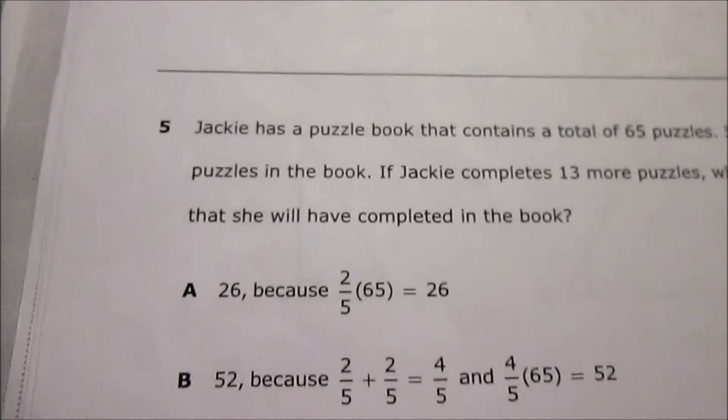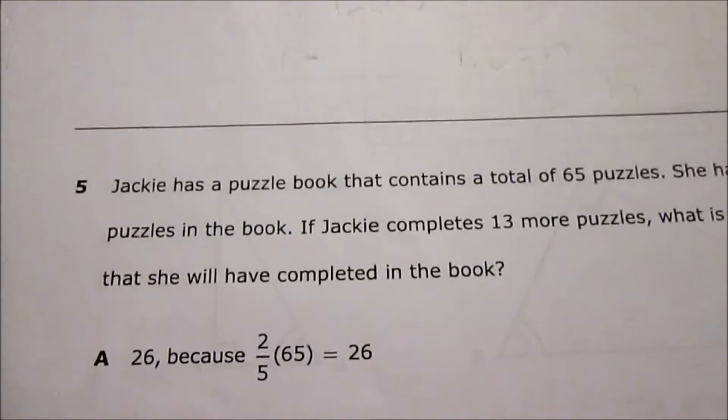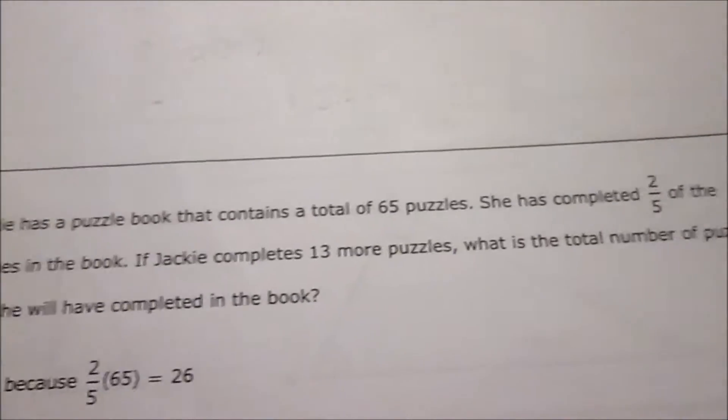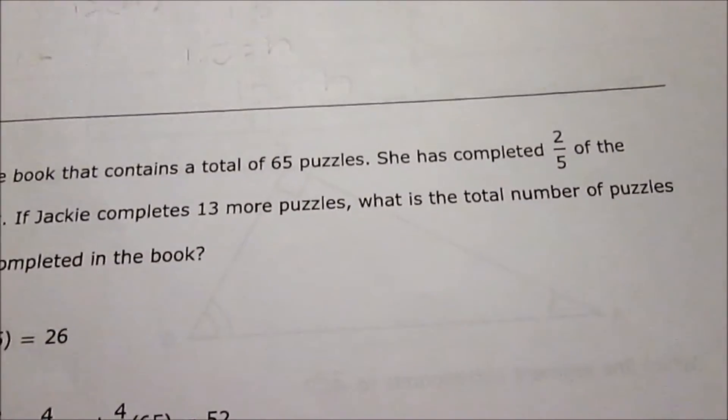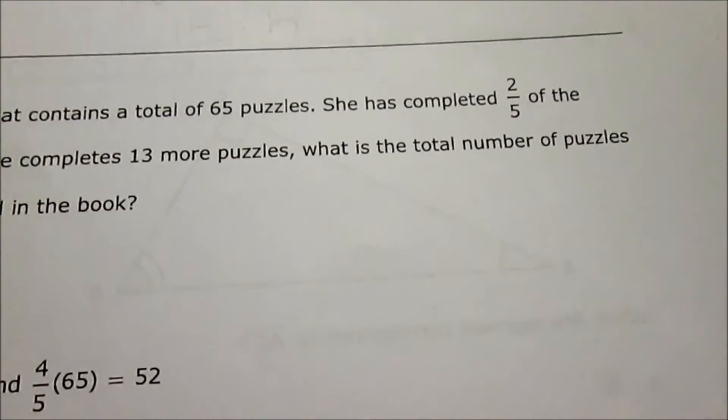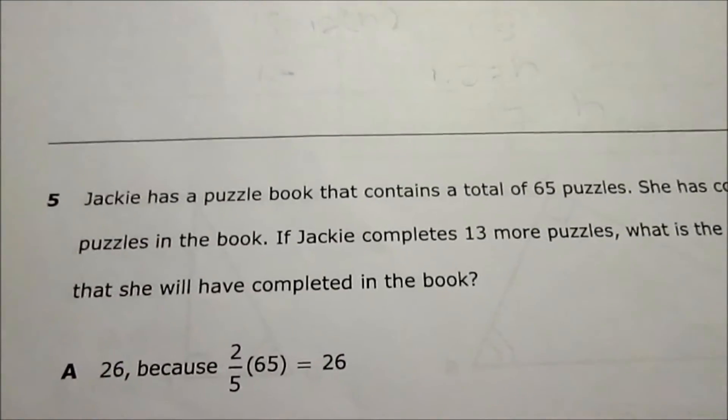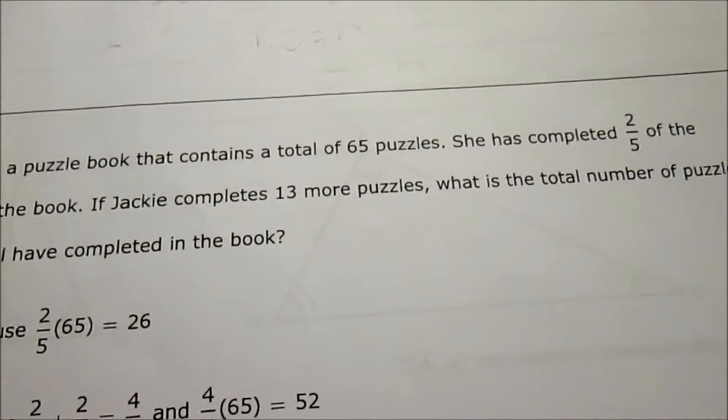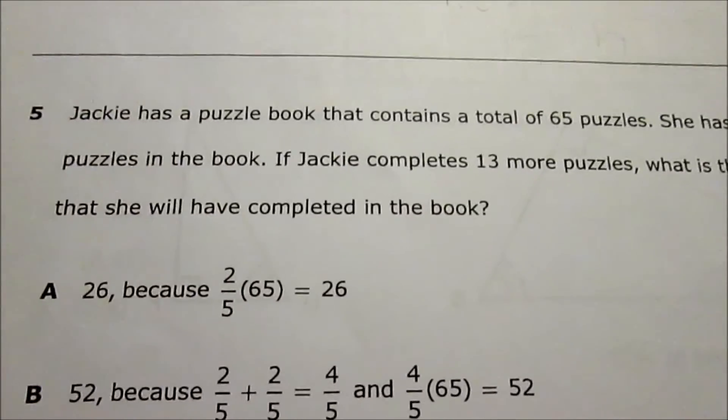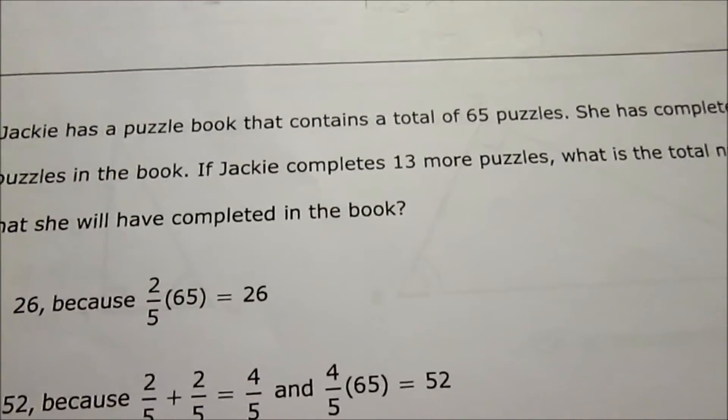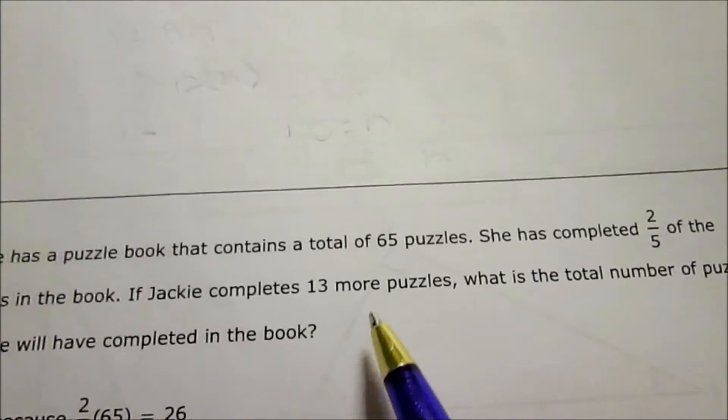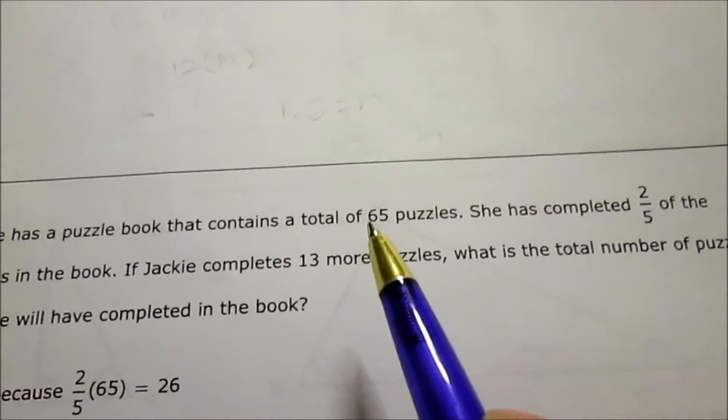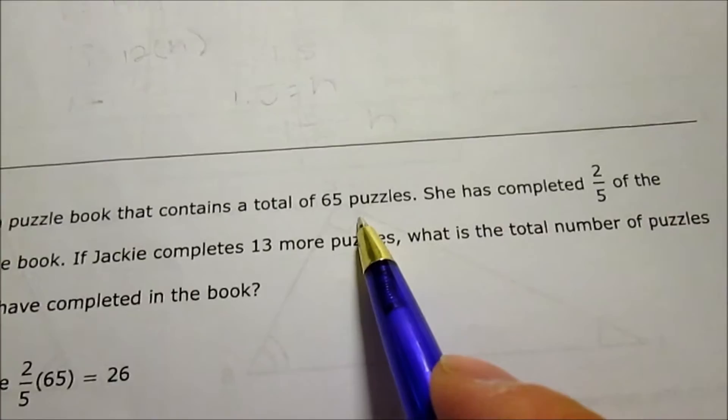Number 5: Jackie has a puzzle book that contains 65 puzzles. She has completed two-fifths of the puzzles in the book. If Jackie completes 13 more puzzles, what is the total number of puzzles she would have completed in the book? So first off, two-fifths of 65, then add in 13 more.